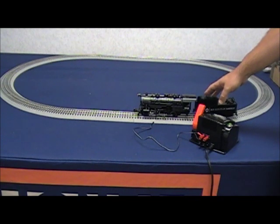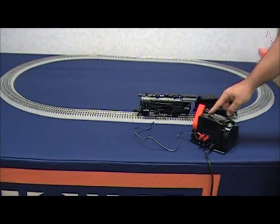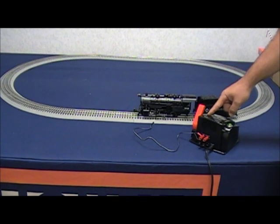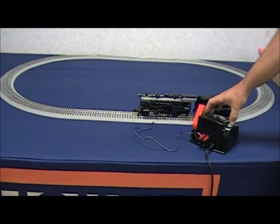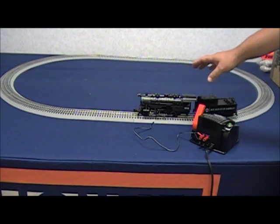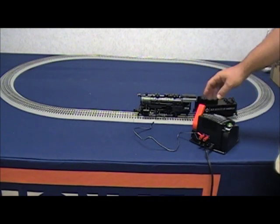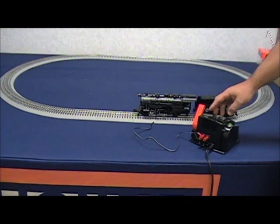This train is not currently equipped with a bell, so when I press the bell button, nothing happens. That's normal. Your transformer is equipped with a bell and whistle button so that should you purchase a train in the future that is equipped with sounds, you'll be able to activate both the whistle or horn and bell.